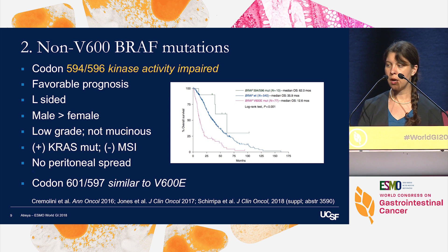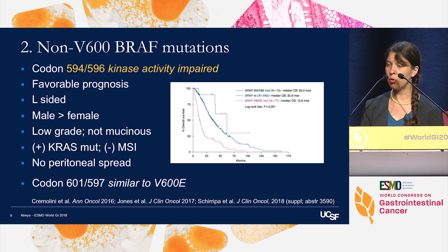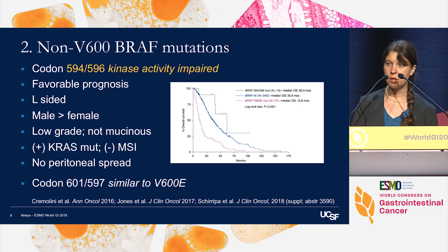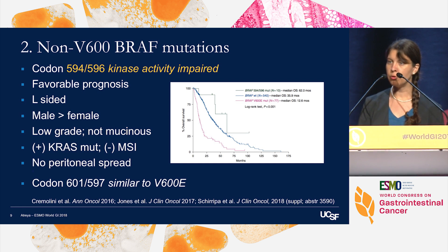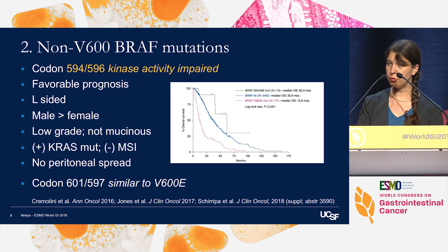Non-V600 BRAF mutations are present in about 2% of colorectal cancers. Most commonly these are in codon 594. Codon 594 and 596 mutations are KRAS activity impaired, so these mutations are associated with a favorable prognosis and opposite features compared to BRAF V600 mutations, including frequent KRAS mutations. Conversely, mutations at codon 601 or 597 have similar features to BRAF V600, including poor prognosis.